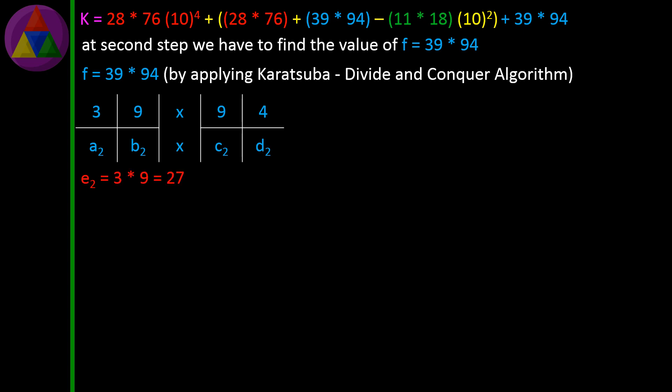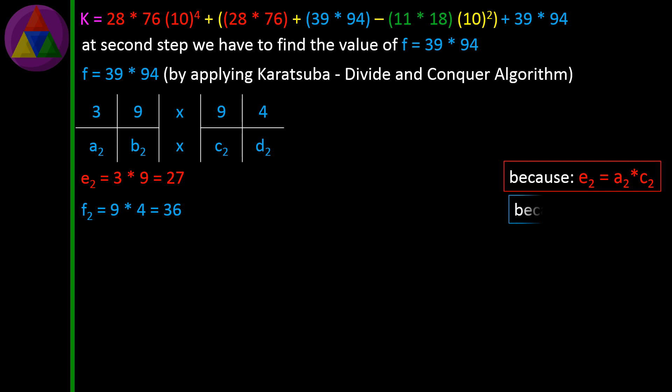E2 = 3 × 9 = 27, because E2 = A2 × C2. F2 = B2 × D2.